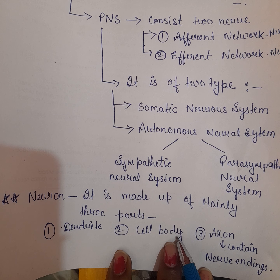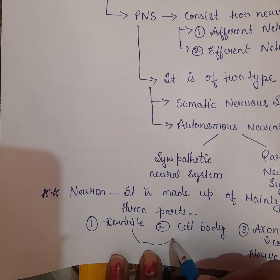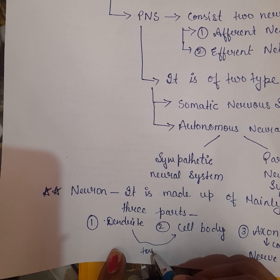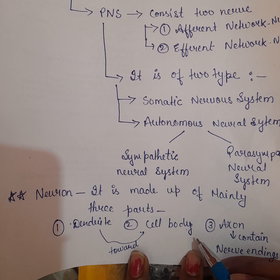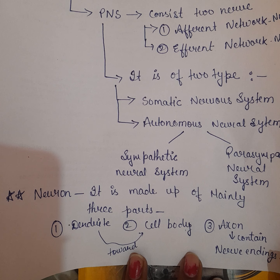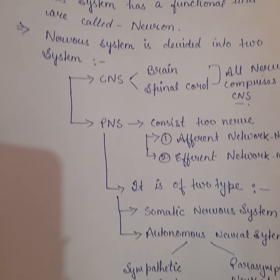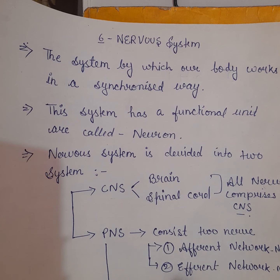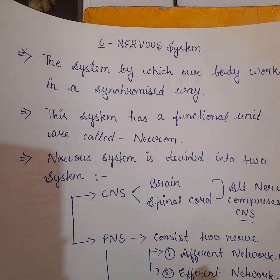Dendrite signal ko towards the cell body transfer karta hai. Wahi axon signal ko transfer away from the cell body karta hai. Yeh choti si baat thi taaki aap thoda sa iske function se relate kar sakein. I hope this video will help you in understanding the nervous system. If you like it, please share it with your friends, and if it is useful, subscribe. Thank you so much.